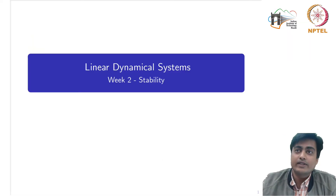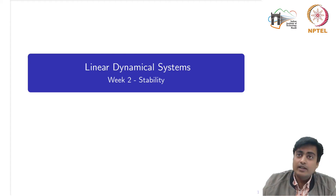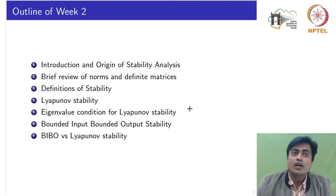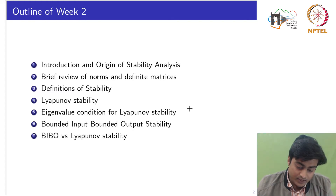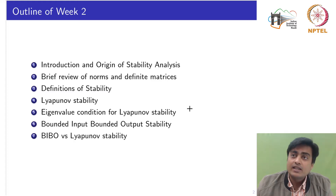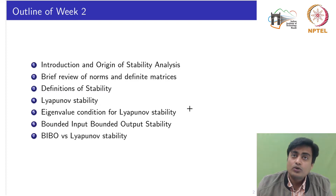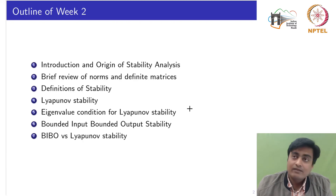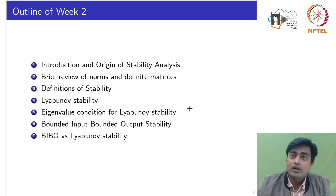Welcome to the second week of the course on linear dynamical systems and stability. This is the overall outline of week 2: we will start with the introduction and origin of stability analysis. Then we will see a brief review of norms and definite matrices. We will then cover different definitions of stability, determine the stability test in the sense of Lyapunov, see the eigenvalue condition with respect to Lyapunov stability, and finally bounded input and bounded output stability and its connection with Lyapunov stability.